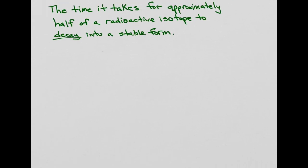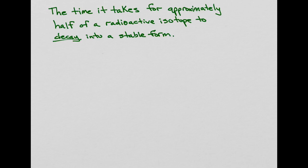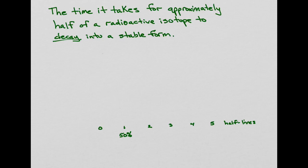This is going to apply to any radioactive substance. If we have a line here from zero half-lives to five half-lives: at one half-life, approximately 50% of your radioactive isotope is present. At two half-lives, 25% is left. At three half-lives, 12.5%. At four half-lives, 6.25%, and at five half-lives, 3.125%, and so forth.